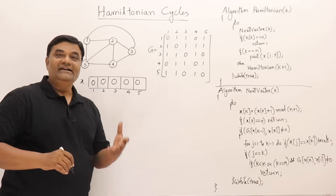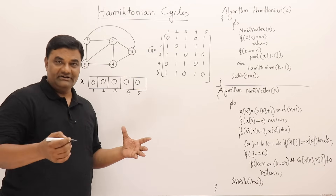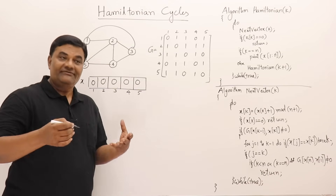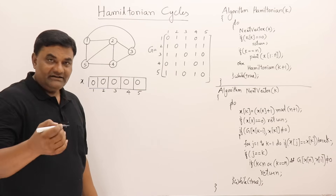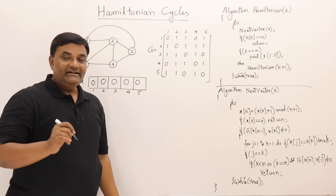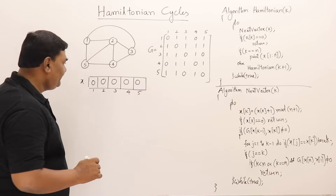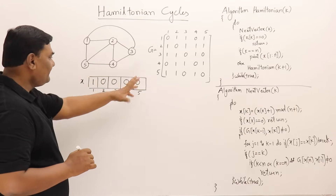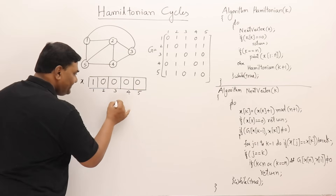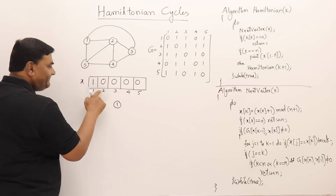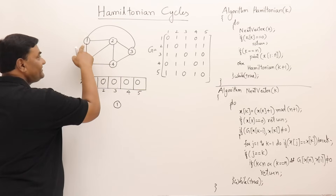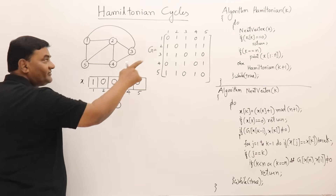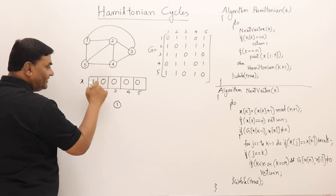I will explain the working through a state space tree. Backtracking works just like depth-first search. To avoid duplicate cycles, we fix the starting vertex as vertex 1. From the second position onwards, we try different vertices. So if starting from 1, where can we go — to 2, 3, or 5? We will try all possibilities using the Hamiltonian algorithm.